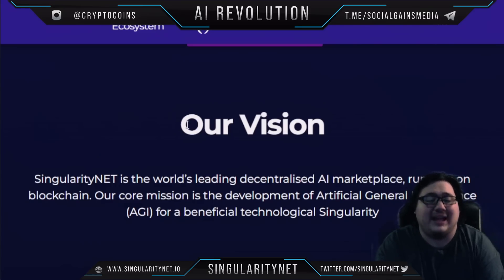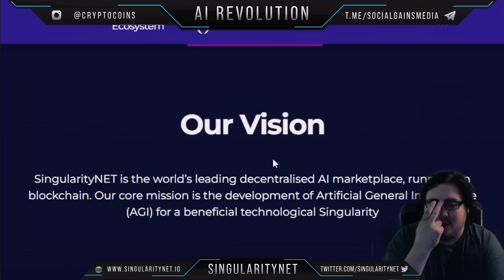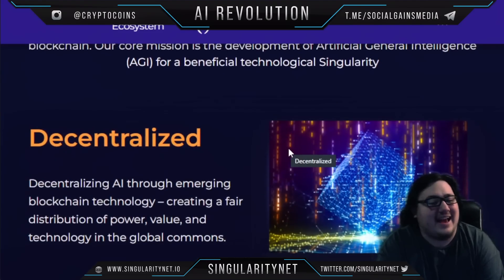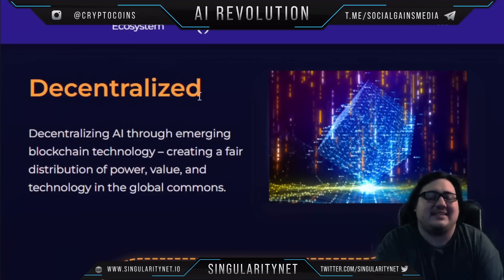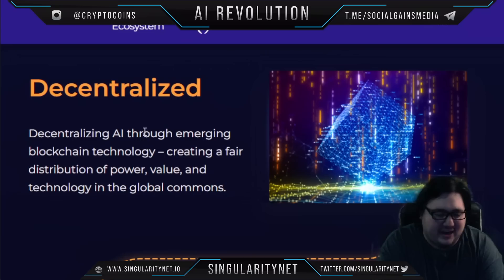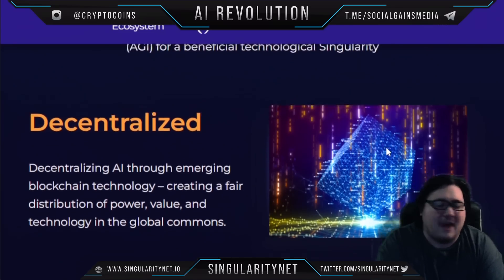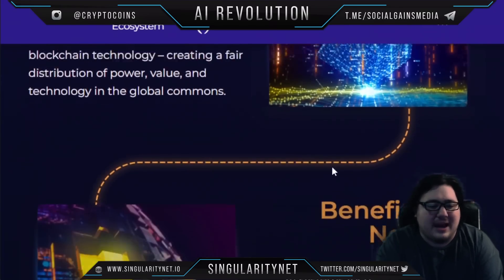It's the world's leading decentralized AI marketplace running on blockchain. Their core mission is the development of AGI, or artificial general intelligence, for a beneficial technological singularity. The goal is decentralized AI through emerging blockchain technology, creating a fair distribution of power, value, and technology in the global commons — which is honestly the goal of a lot of AI producers, but not many have actually achieved it.